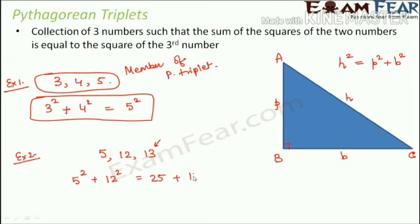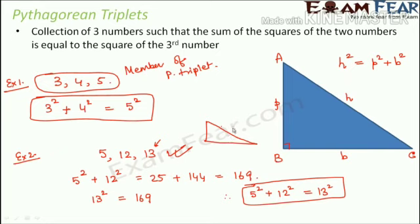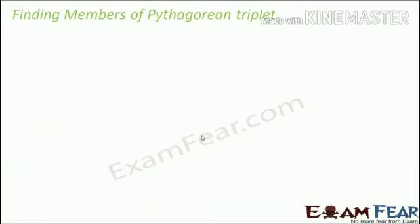5² = 25 and 12² = 144, so their sum is 169. Now 13² = 169 as well. Since 5² + 12² = 13², the relationship holds true, and 5, 12, 13 form a Pythagorean triplet. This means these three numbers can form the sides of a right-angle triangle where the hypotenuse is 13, the base is 12, and the perpendicular is 5.